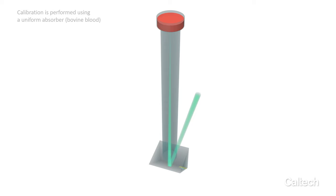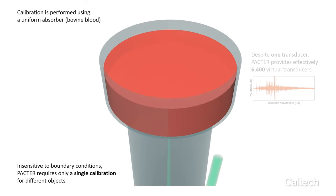The calibration is performed using a uniform absorber, such as blood. Owing to its insensitivity to the boundary conditions of the object, PACTER requires only a single calibration for different objects.